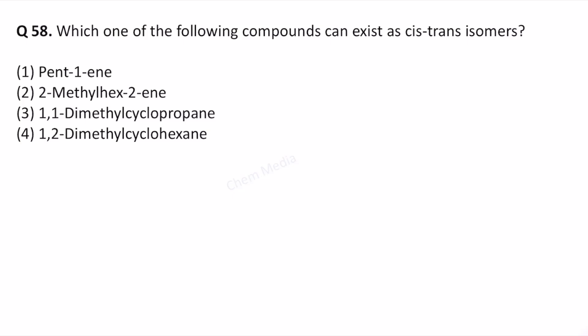Hello everyone, here is a question based on stereoisomers. Which one of the following compounds can exist as cis-trans isomers? Let's draw the structures one by one.